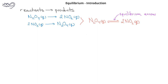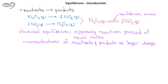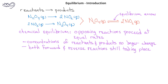We call it an equilibrium arrow because when you have reactions that have both forward and reverse components, reactions will reach a state that we call chemical equilibrium. This is the situation when opposing reactions proceed at equal rates in opposite directions. At equilibrium, the concentrations of reactants and products no longer change, even though both the forward and reverse reactions are still taking place.